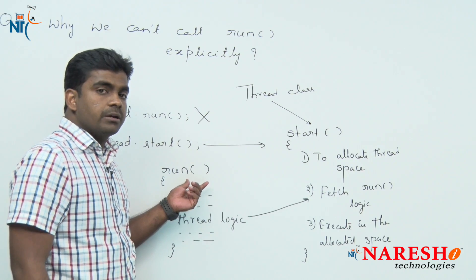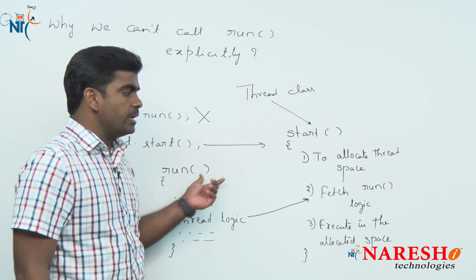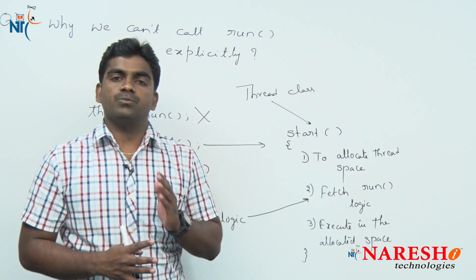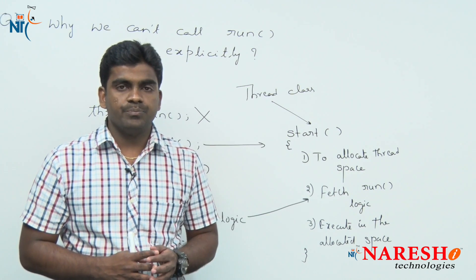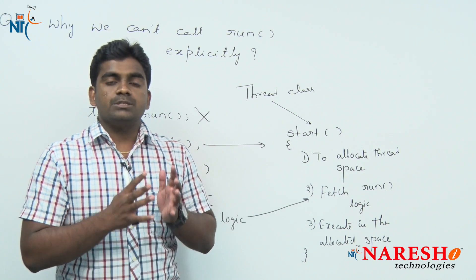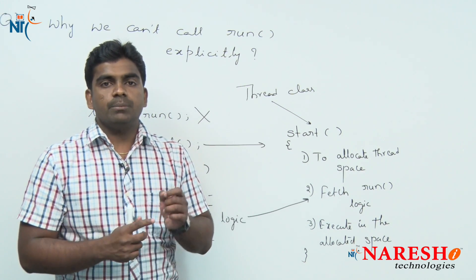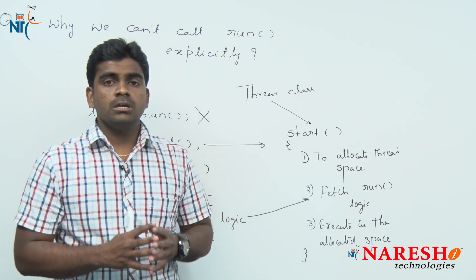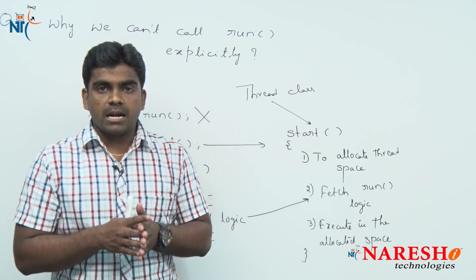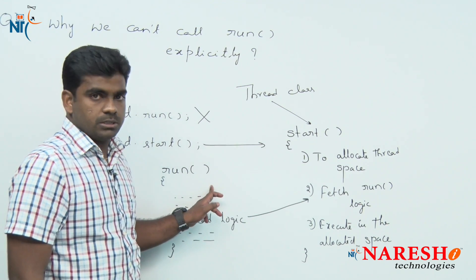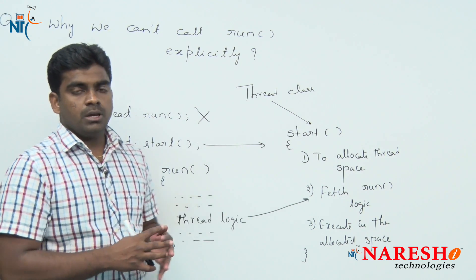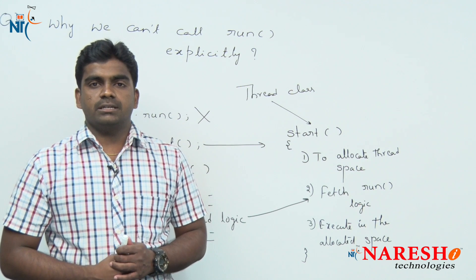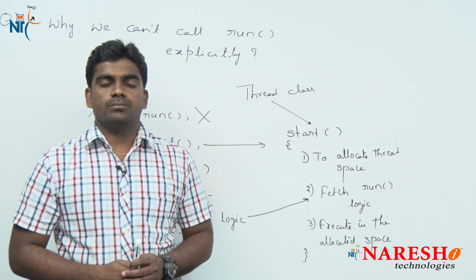If I write the logic to allocate the thread space myself, it is possible, but that is very expensive and very hard. That is why it is better to depend on the available source — which is calling the start method to execute the thread logic. For more videos, please subscribe to the Naresh IT channel. Thank you all.